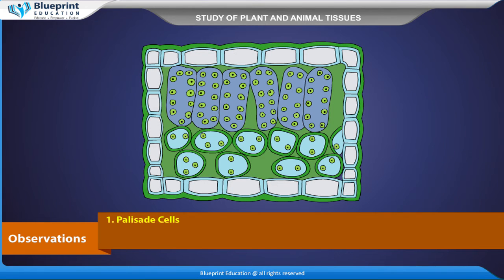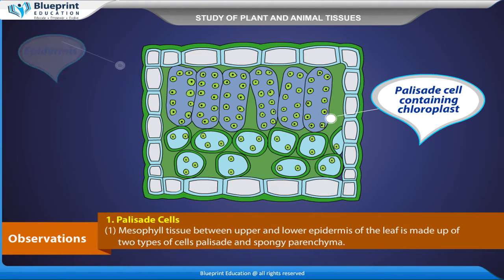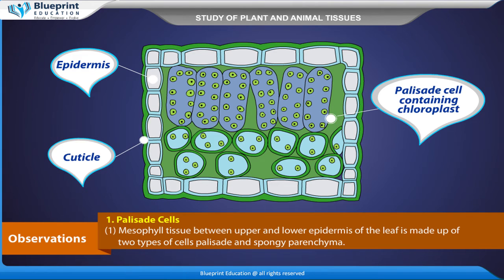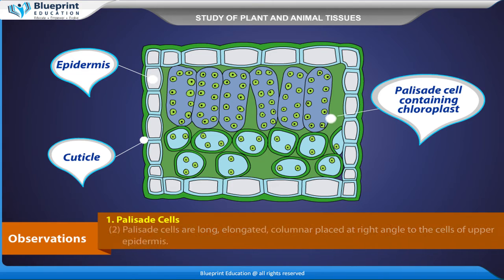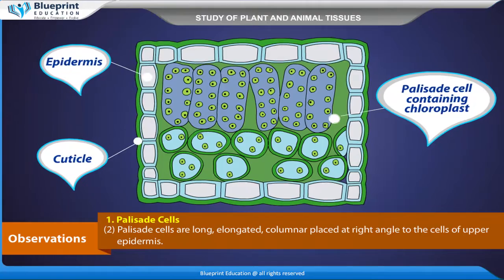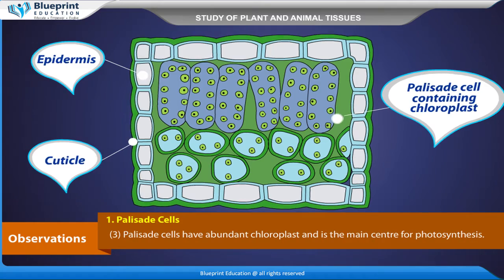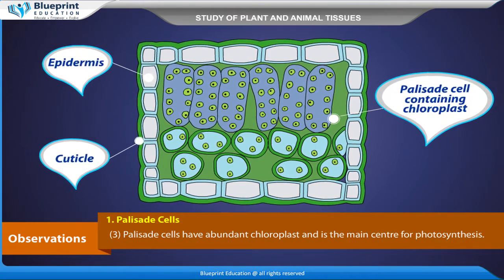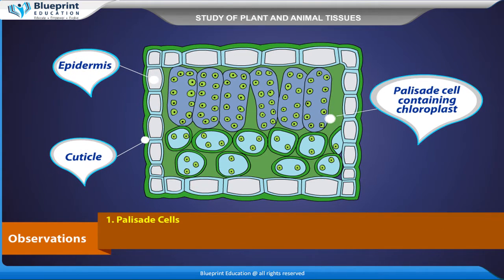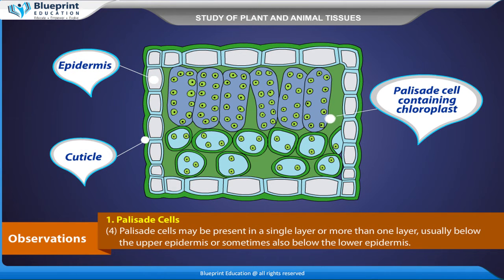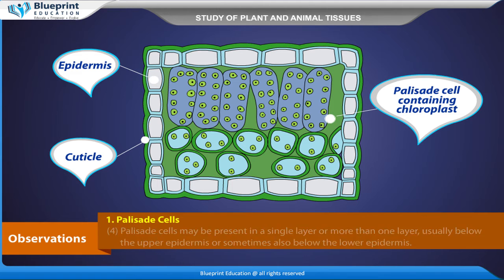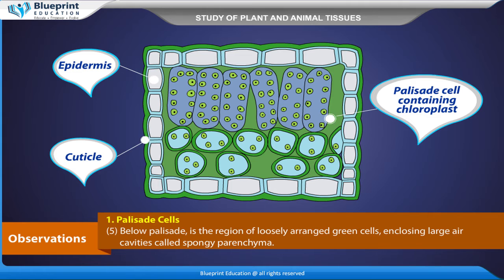Observations — Palisade cells: The mesophyll tissue between upper and lower epidermis of the leaf is made up of two types of cells — palisade and spongy parenchyma. Palisade cells are long, elongated, columnar, placed at right angles to the cells of upper epidermis. They have abundant chloroplasts and are the main center for photosynthesis. Palisade cells may be present in a single layer or more than one layer, usually below the upper epidermis or sometimes also below the lower epidermis.